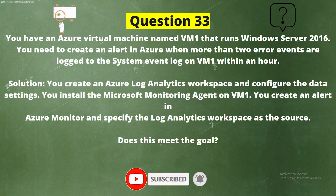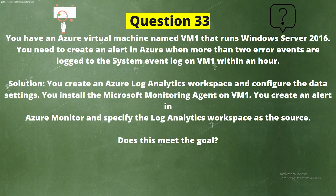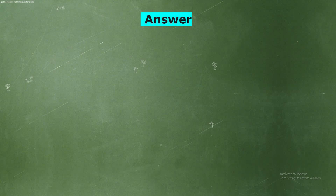Question 33: You have an Azure virtual machine named VM1 that runs Windows Server 2016. You need to create an alert in Azure when more than two error events are logged to the system event log on VM1 within an hour. Solution: You create an Azure Log Analytics workspace and configure the data settings. You install the Microsoft Monitoring Agent on VM1. You create an alert in Azure Monitor and specify the Log Analytics workspace as the source. Does this meet the goal? Option A: Yes. Option B: No.